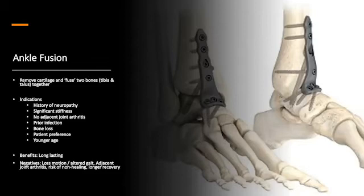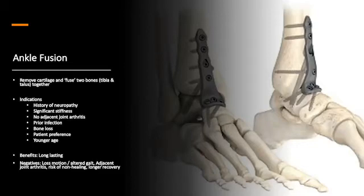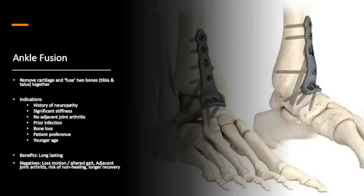We'll talk about patients who have arthritic ankles due to neuropathic ankles, significant stiffness, or arthritis in other joints. If they have no arthritis in other joints, we know that if all the joints around the talus become fused or arthritic, these patients do very poorly. History of prior infection may preclude an ankle replacement, significant bone loss, and sometimes patient preference. Ankle arthritis is often post-traumatic, and we're seeing a lot of younger patients with this disease process. As our ankle replacements get better, our indications expand. But in very young patients, sometimes an ankle fusion is a very good option, despite its limitations.